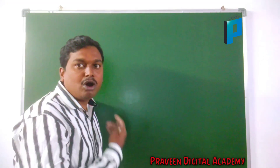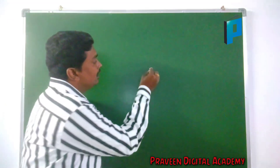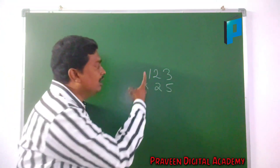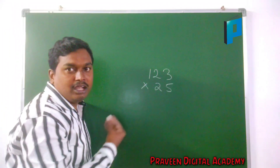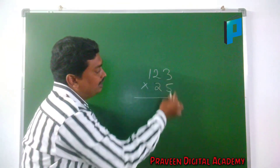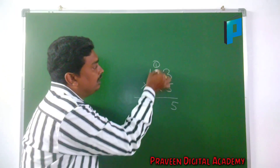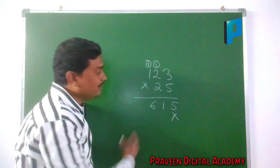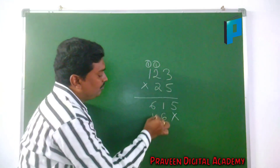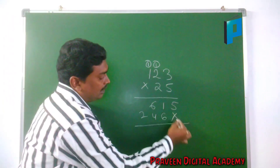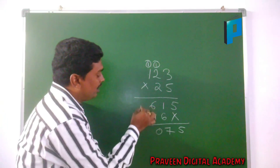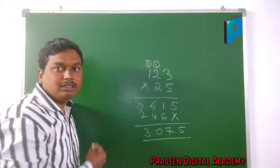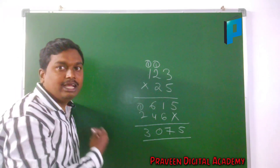Here if you are having 123 into 25, we will multiply in the traditional way. 3×5 is 15, carry 1; 5×2 is 10, plus 1 is 11, borrow 1; 5×1 is 5 plus 1 is 6; then 3×2 is 6, 2×2 is 4, 2×1 is 2. Adding gives 5, 7, 0 with carries — this takes a lot of time.